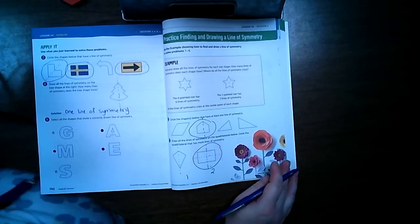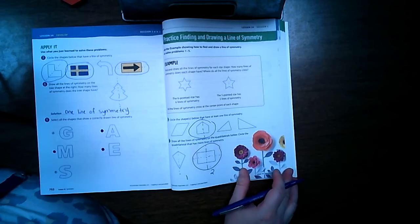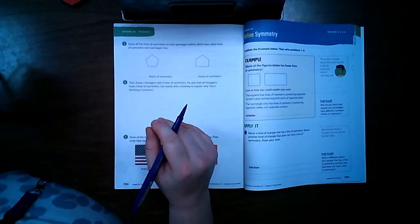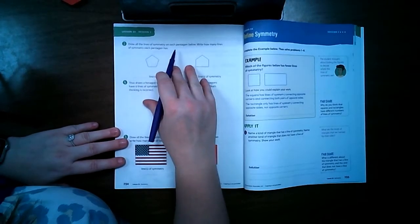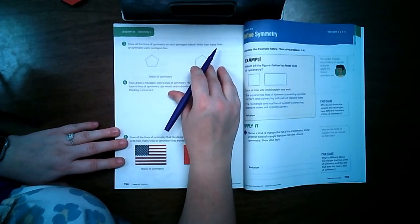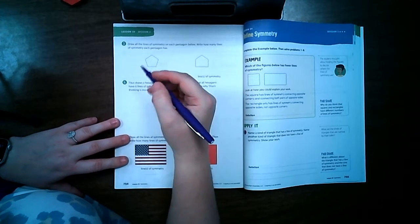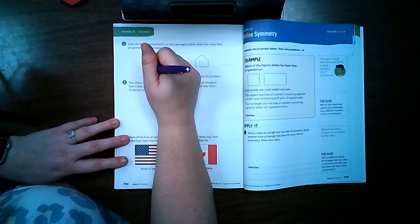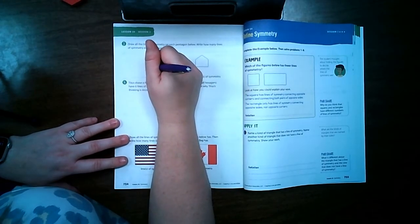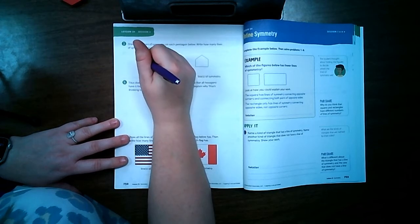We're gonna go to page 754. Draw all the lines of symmetry on each pentagon below. Write how many lines of symmetry each pentagon has. Okay, first I'm gonna start with the harder ones, start with these.